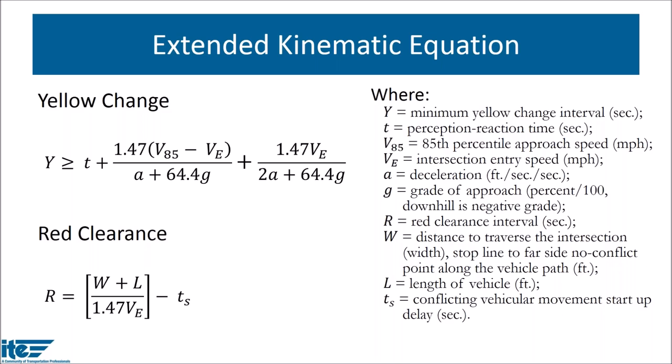The other thing to notice about this equation is that if the approach speed V85 and the intersection entry speed VE are identical — which they would be for a through movement — the equation reduces back to the traditional kinematic equation. For a through movement, V85 and VE are the same, the middle term zeroes out, and VE becomes the approach speed V85. For a turning movement, though, use of this equation will add additional time to account for the slowing at the intersection.